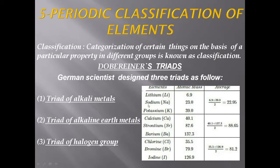According to Dobereiner, he selected three elements and according to this theory, the mass of the middle element is the average of the first and third element's mass. He arranged three atoms in increasing order of their atomic mass and considered only three elements in each group. The middle element's atomic mass is the mean of the first and third.